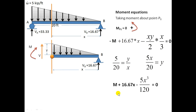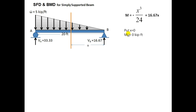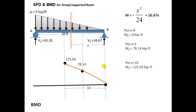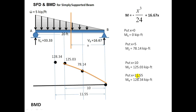Using the moment equation, I draw the bending moment diagram by substituting values of X. At X = 0, I get the moment at that point. At X = 5 and X = 10, I get the respective moment values. I also need the distance X = 11.5 where the shear force is zero, because at that point the bending moment is maximum.